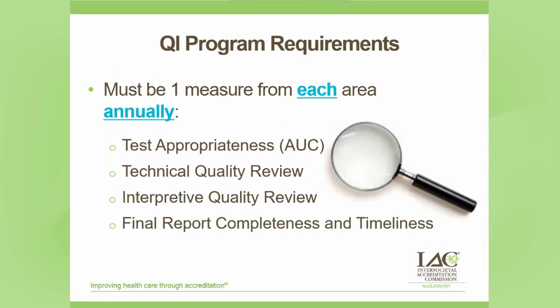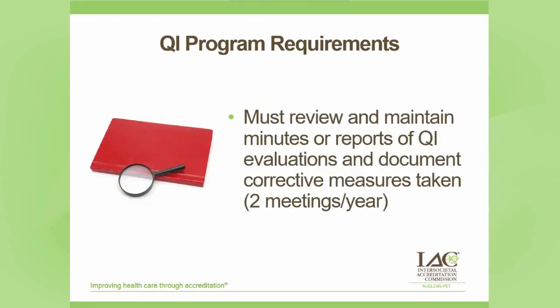The IAC QI program requirements state that you must include at least one measure from each of the following four areas: test appropriateness or appropriate use criteria, technical quality review, interpretive quality review, and final report completeness and timeliness. In addition, you need to review and maintain minutes or reports of the QI evaluations and document any corrective measures taken. You are required to have two QI meetings a year, and you must discuss these measures at at least one of the two meetings.